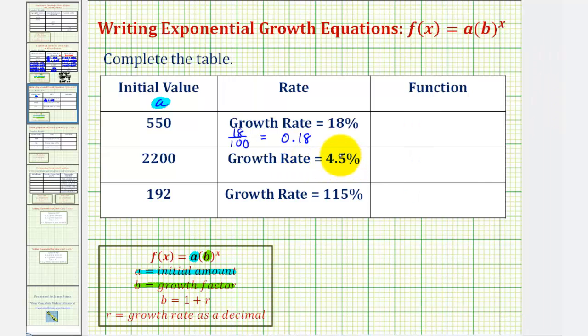So for 4.5 percent as a decimal, we have 4.5 divided by 100, which would be equivalent to 0.045.